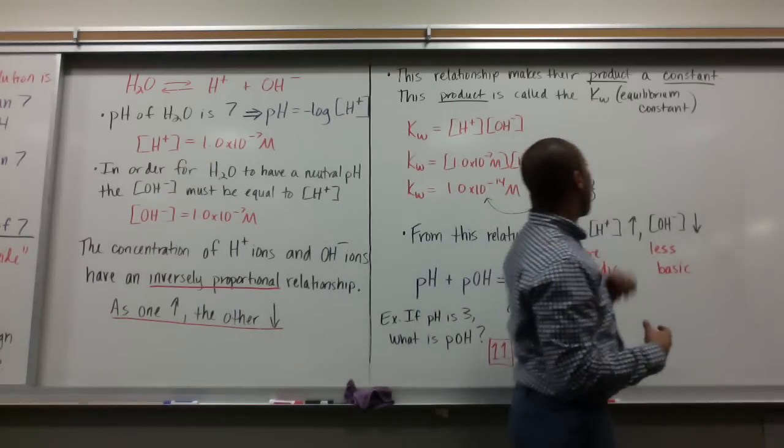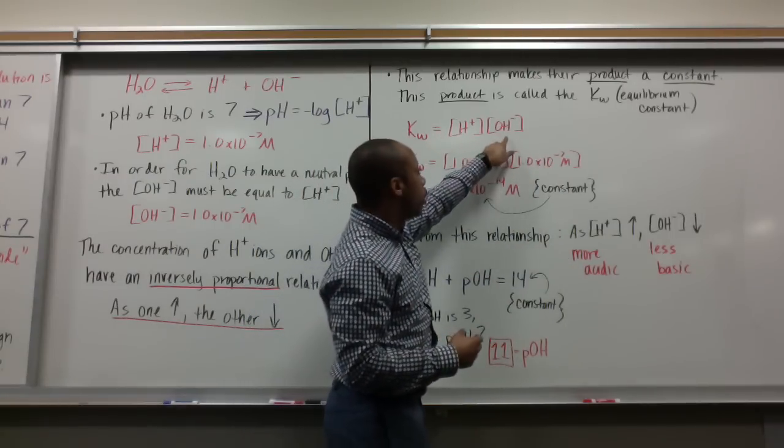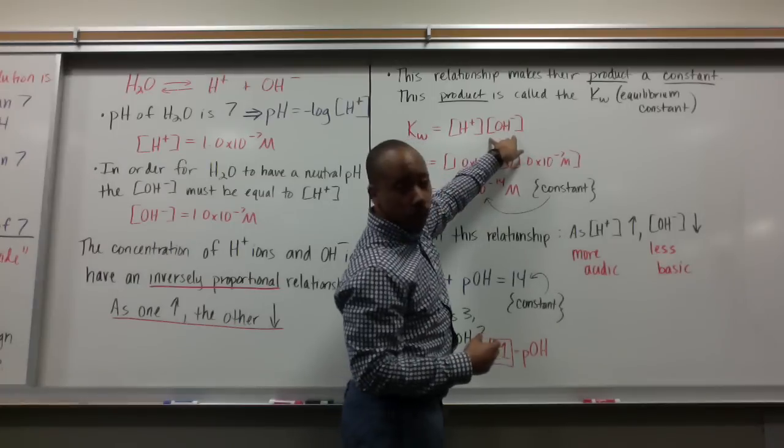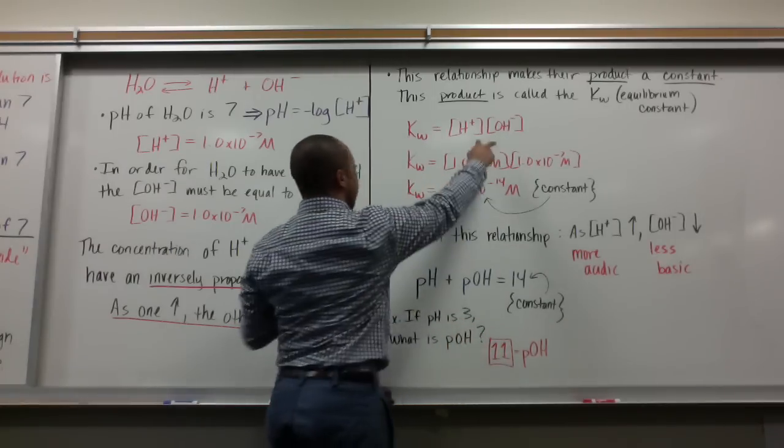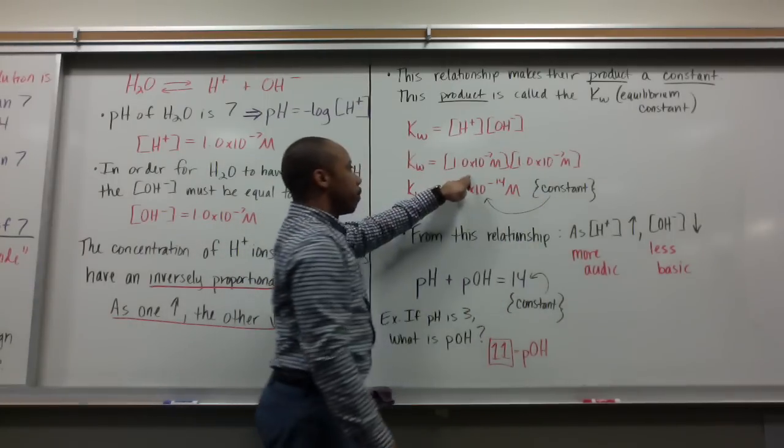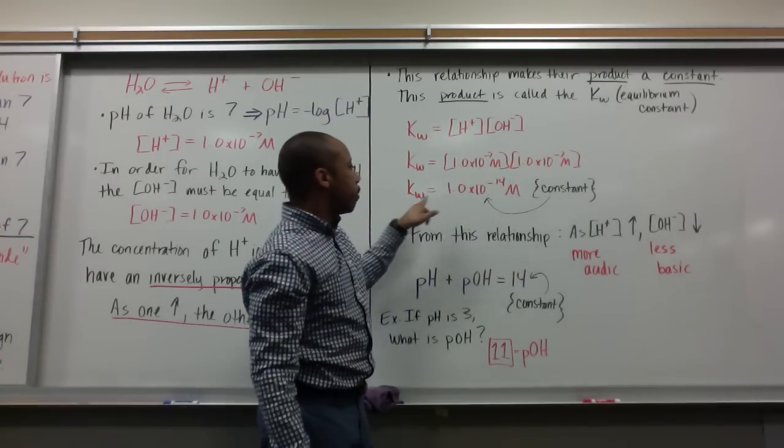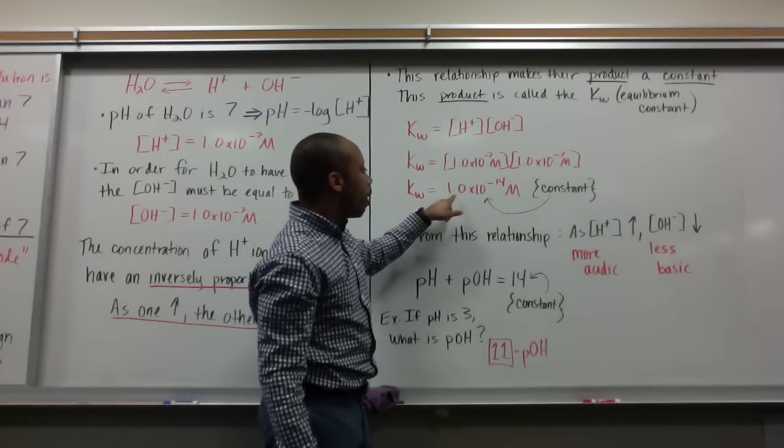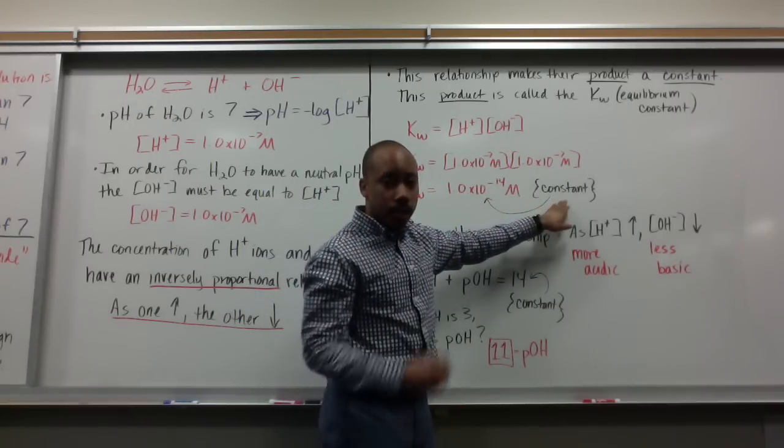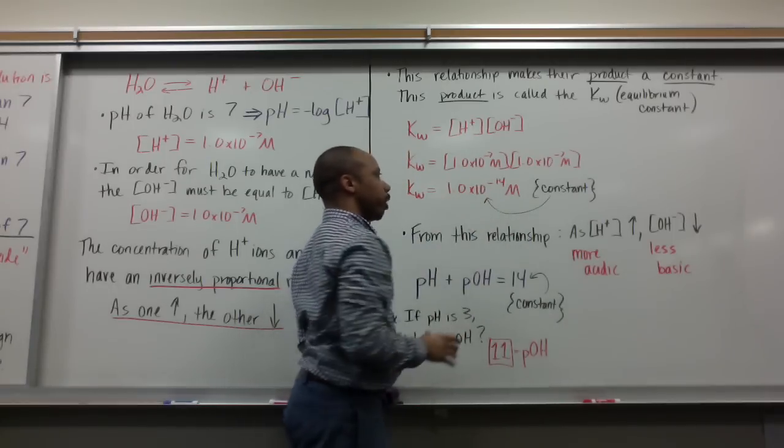KW equals the product of the two concentrations: concentration of H plus times concentration of OH minus. If I plug in these values, I get 1 times 10 to the negative 7 times 1 times 10 to the negative 7. Once I multiply these together, KW equals 1 times 10 to the negative 14 molar. This is a constant.